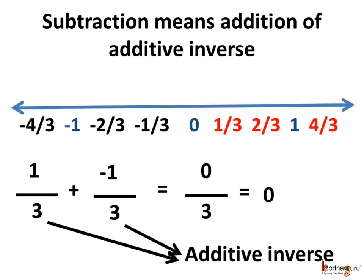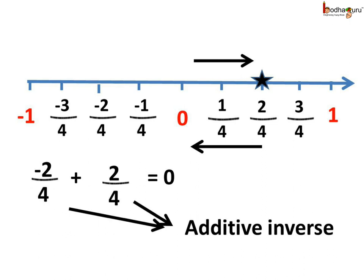All rational numbers have an additive inverse, and any rational number can be placed on the number line. The additive inverse of a rational number is another rational number with the same absolute value but with the opposite sign. For example, the additive inverse of 1/3 is minus 1/3. If we add 1/3 and minus 1/3, we get 0/3, which is equal to 0.